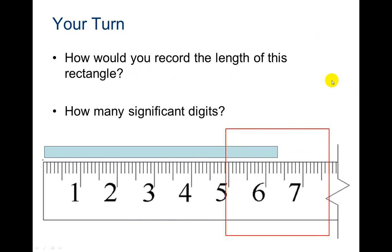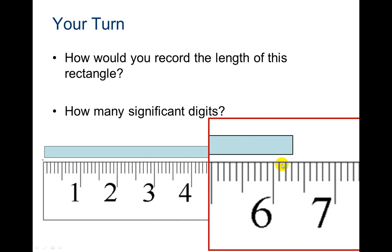How would you record the length of this rectangle? Let's look a little closer. So our certain digits is 6.1, 2, 3. So 6.3 is certain and then it looks just a little bit longer. I'm going to go with maybe 6.32. On this one it says it's 6.33. Again, 6.32 and 6.33 are the same thing because that last number is that estimate. So how many significant figures or significant digits? There are 3: one, two, three.